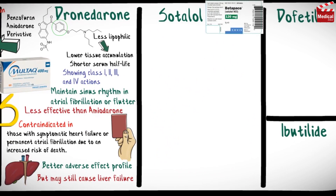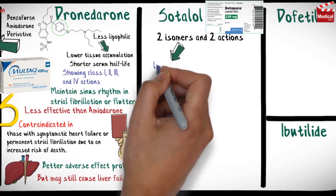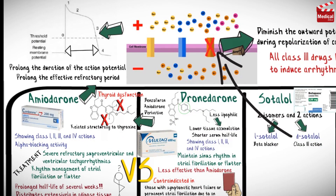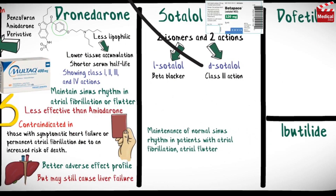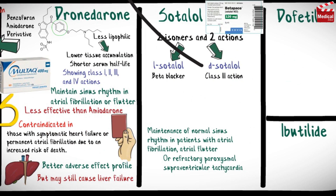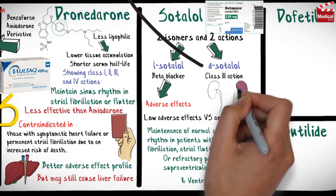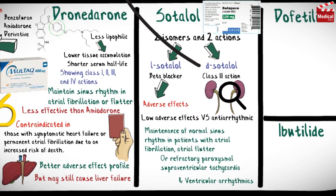Sotalol has two isomers and two actions. The levo-isomer has beta-blocking activity, and the dextro-isomer has class 3 action, blocking the rapid outward potassium current and prolonging the duration of the action potential. It is used for maintenance of normal sinus rhythm in patients with atrial fibrillation, atrial flutter, or refractory paroxysmal supraventricular tachycardia, and in the treatment of ventricular arrhythmias. This drug can cause typical adverse effects associated with beta-blockers, but has a low rate of adverse effects compared to other antiarrhythmic drugs. The dose should be monitored in patients with renal disease, since the drug is renally eliminated.